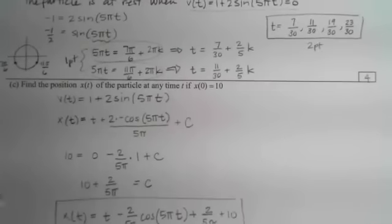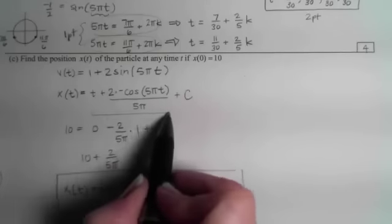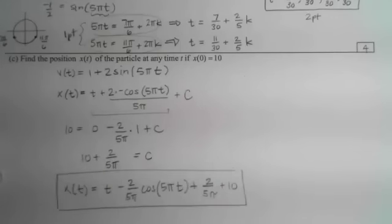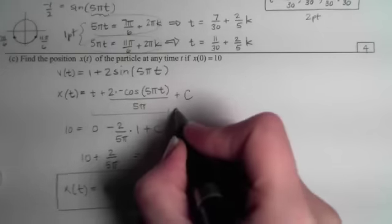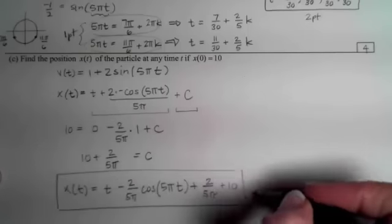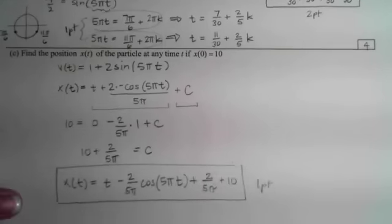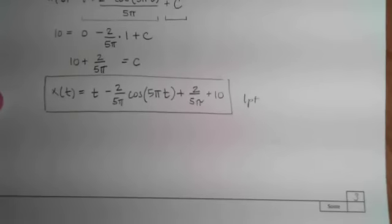Part C, we want the anti-derivative. We get 1 point for doing the anti-derivative without the plus C. We get another point for the plus C. And we get a third point for solving for C and getting our final answer. So 3 points for part C. And that's our total of 9.